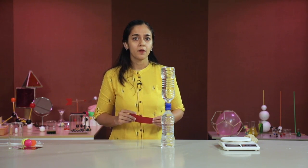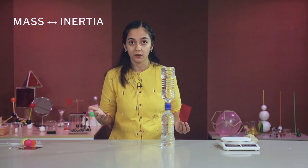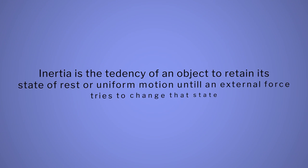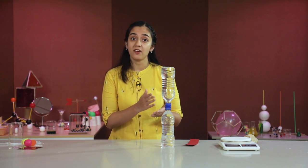The bottles are standing like this because of inertia. According to Newton, the more the mass, the more will be the inertia. Inertia is the tendency of an object to retain its state of rest or uniform motion until something external tries to change that state. When we flick the strip, it fell down in motion while the bottles remained at rest.